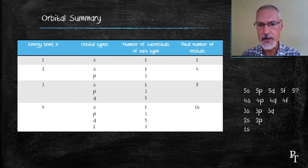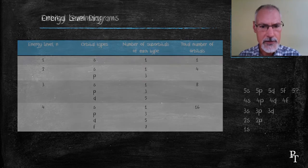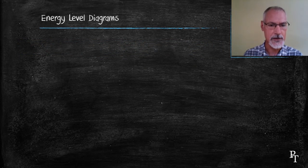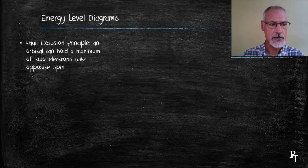I'm going to return to this diagram on the right a little bit later on. I want to introduce now the idea called an energy level diagram. In order to understand energy level diagrams, we have to take a look at the concept of the Pauli exclusion principle.